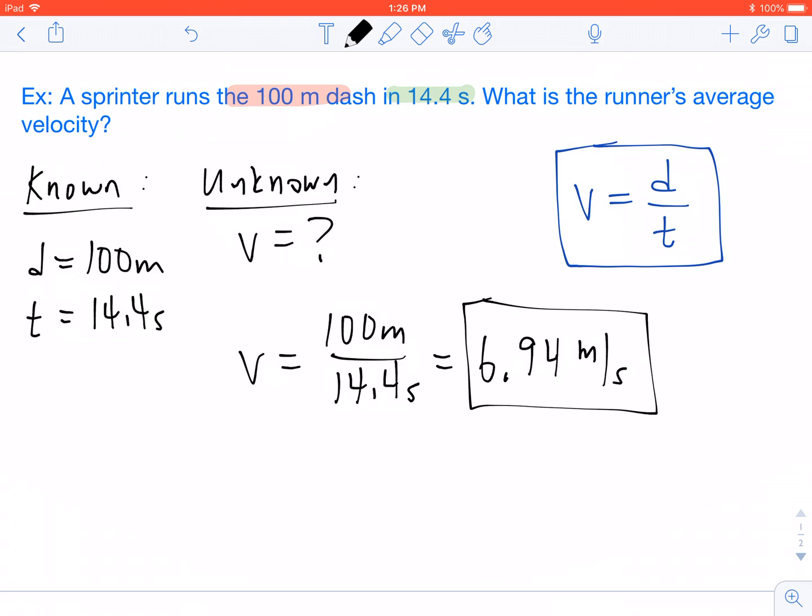When we do our calculation, we get an average velocity of 6.94 meters per second. Thank you.